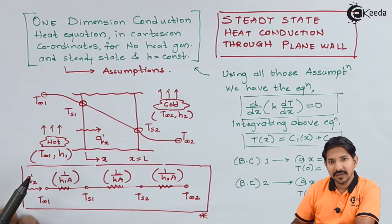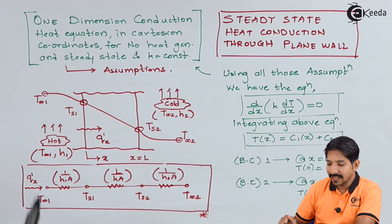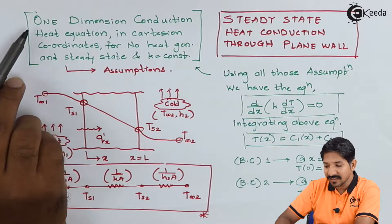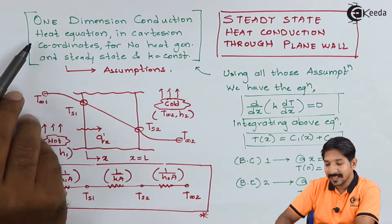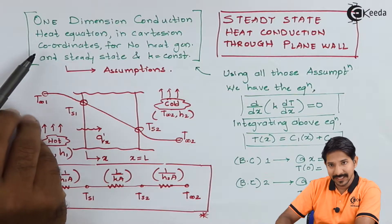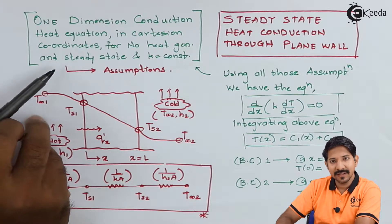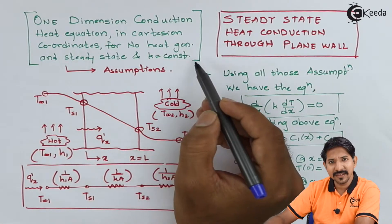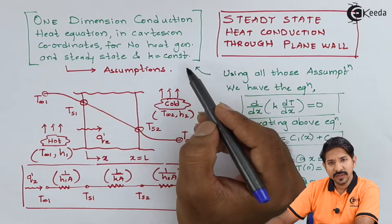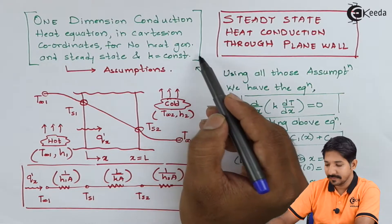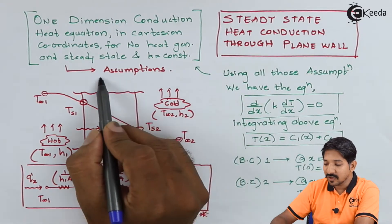Now here, the assumptions that we are going to use are: that the heat transfer is one-dimensional, it is in Cartesian coordinates, there is no heat generation, and there is steady state heat transfer. And lastly, we will assume that the value of K, that is the thermal conductivity, is constant throughout the material. These are my set of assumptions.